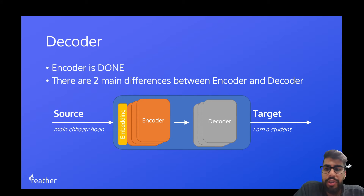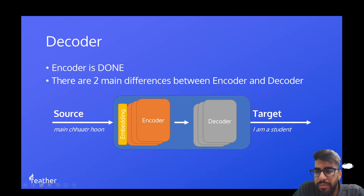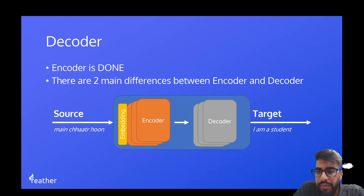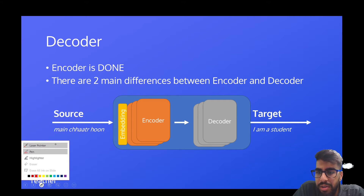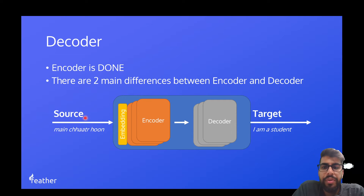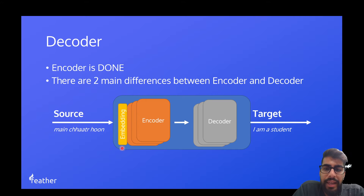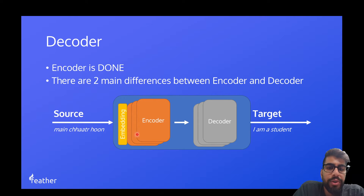Just to remind you of where we're at: we have our source sentence in our source language, and we've looked at what this embedding layer consists of — the embedding and the position encoding. We've looked at what's inside one encoder layer, and we've also looked at how to build up the whole encoder stack.